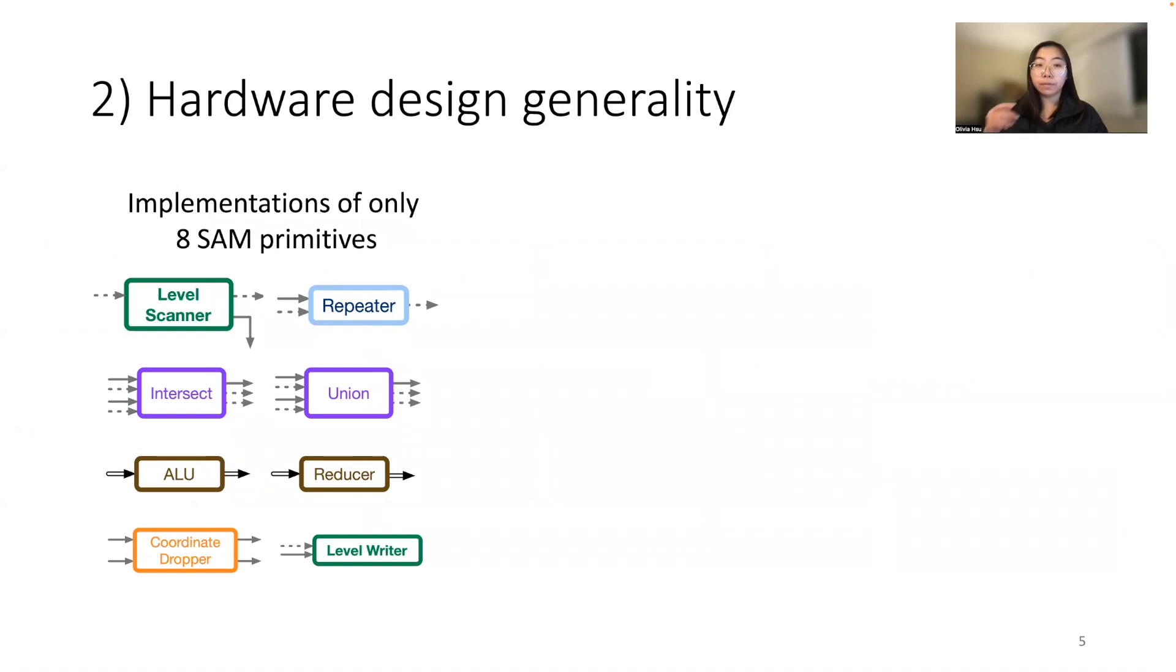The next benefit we found is hardware design generality. The sparse abstract machine is defined such that there are clean interfaces for eight SAM primitives that cover the entire space of sparse tensor algebra. Since our hardware leverages the sparse abstract machine, we only have to implement eight SAM primitives to describe the entire space of sparse tensor algebra.